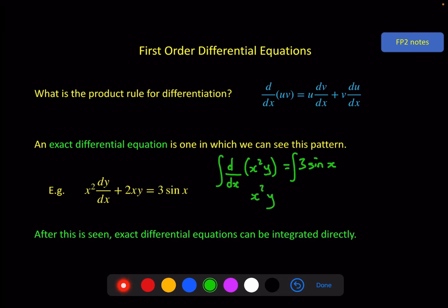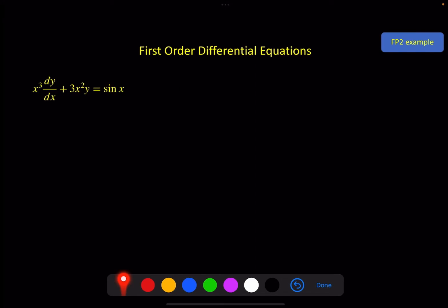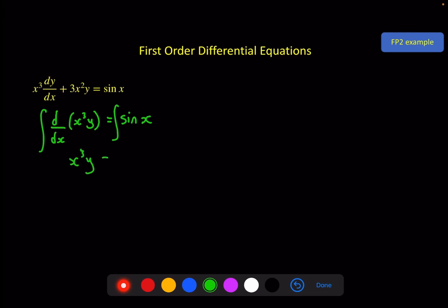When we integrate both sides with respect to x, the integral and the derivative effectively cancel out, and we get x squared y. On the right-hand side, sine x integrates to give minus cosine x, so we get minus 3 cosine x, plus c. A quick example: here we've got x cubed, which differentiates to give 3x squared, and y differentiates to give dy by dx. So this has come from the derivative of x cubed y. Integrating both sides gives x cubed y on the left, and minus cosine x plus c on the right.